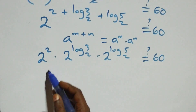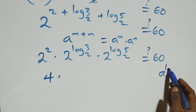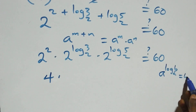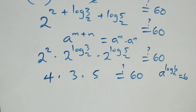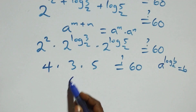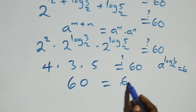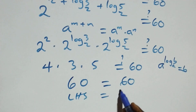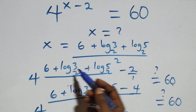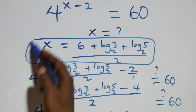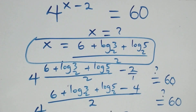Two squared is four. Using the rule a raised to power log b base a equals b, we get four times three times five equals sixty. And indeed four times three is twelve, times five is sixty, which equals sixty. Left-hand side equals right-hand side. So we conclude that x equals (6 plus log 3 base 2 plus log 5 base 2) all over 2 satisfies the given problem. Thank you for watching — don't forget to subscribe for more videos, turn on the notification bell, share this video, give a thumbs up, and put your comment. See you next class, bye for now.